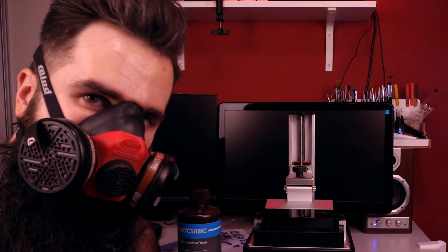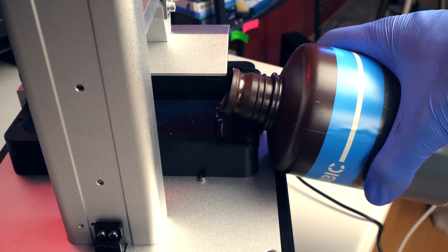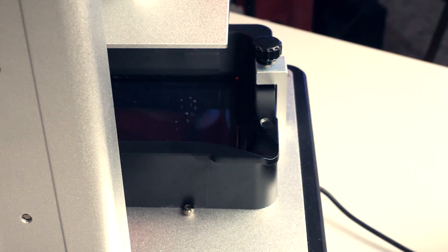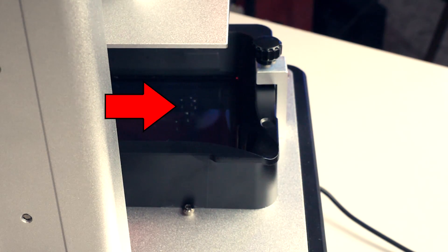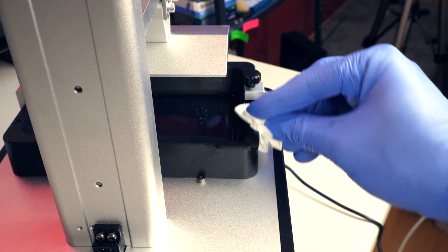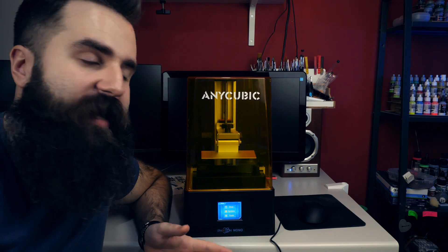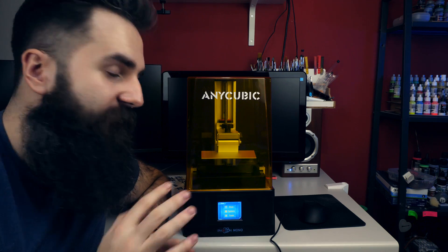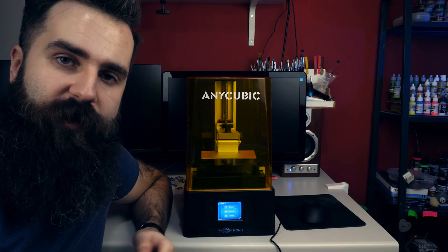Simply pour some resin in there. Now let it sit for a little while since there are little air bubbles, and you don't want them there. Of course you should keep it as clean as you can. So now everything is ready. The resin is inside, the files have been sliced. So let's print. And now we wait.